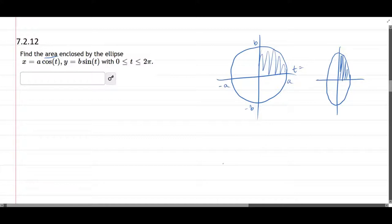And what t value starts here? Well, I want my x-coordinate to be big. So how do I make cosine big? t is zero. And at the top, what t value would we have going this direction? Well, I want my x-coordinate to be zero and my y-coordinate to be big, so that would be pi over two. So those are my two t values, zero to pi over two.